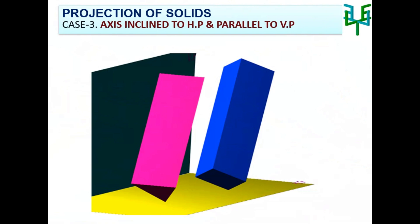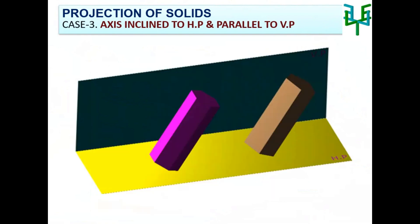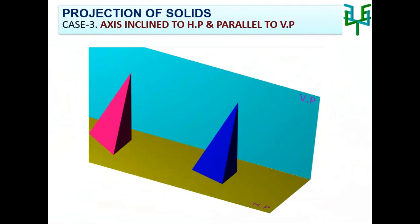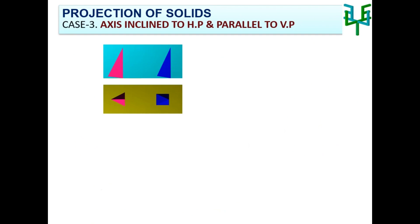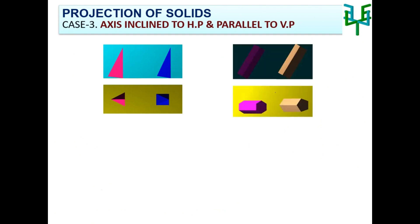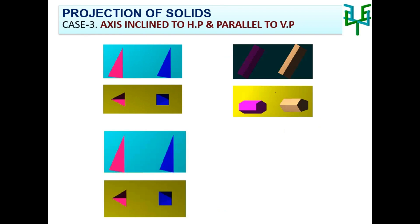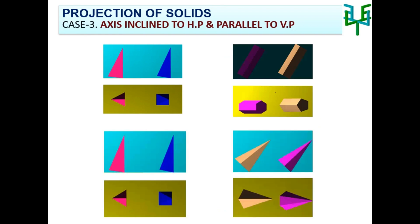If the axis is inclined to HP, initially we assume that the axis of the solid is perpendicular to HP. The projection of the solid with axis perpendicular to HP and parallel to VP must be drawn as the first stage — a condition already discussed in the previous video. According to the given inclination with HP, the elevation of the first stage should be tilted with respect to the X-Y line. Then, by projecting from the elevation of the second stage and plan of the first stage, the final plan can be drawn.